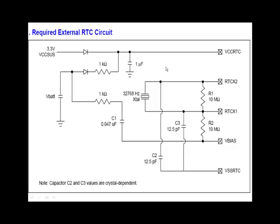This is the circuit of the RTC circuitry. You can see some 5 signals here. This is the voltage of the RTC, this is the crystal, and these are the 2 points where the crystal is connected straight to the south bridge. Points 1, 2, 3, 4, and 5 all get connected to the south bridge. This is the V-bias and this is VSS RTC, that is the ground or the negative.